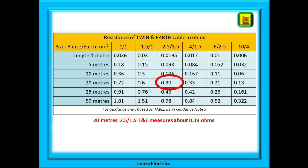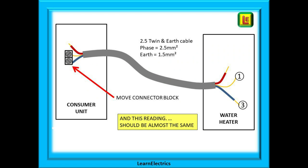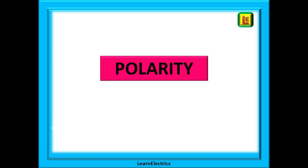Now move the connector block so that it connects the neutral and earth together. Carry out the low ohms test again between the points marked one and three on the drawing. As the neutral is the same size as the phase and is the same length, we should get the same reading for this test — about 0.39 ohms. This result is not recorded on the test certificate, but we do need to know that it is a good test.